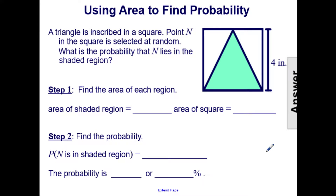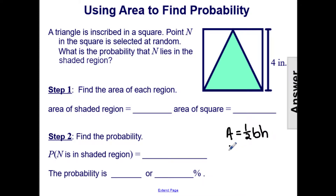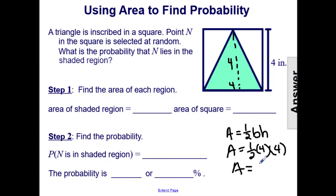Here's another example where we have a triangle inscribed in a square. Point N in the square is selected at random. What is the probability that N lies in the shaded region, which is the triangle? Step one is we have to find the area of each region. First, let's find the area of the shaded region — it's a triangle, so the formula is 1/2 base times height. Because this triangle is inscribed in the square, we have a base of 4 and a height of 4, so it would be 1/2 times 4 times 4, giving an area of 8.